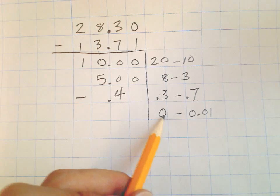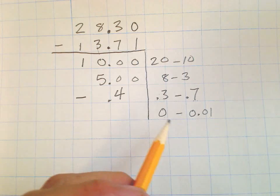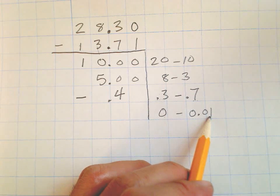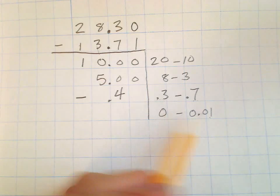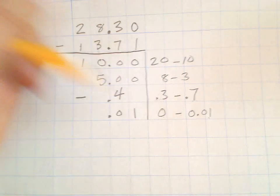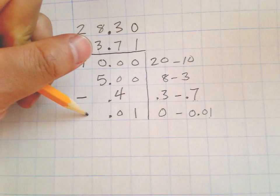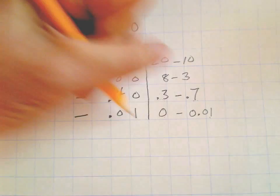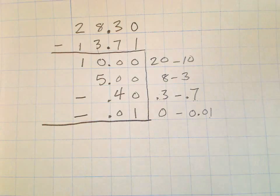Same thing over here: 0 minus 1 hundredth is going to be less than zero itself. It's going to be 1 hundredth less than zero. I can try that trick the same way. 1 hundredth minus 0 is 1 hundredth, and then because 0 is smaller than 1 hundredth, we have to make sure that that's a negative number.